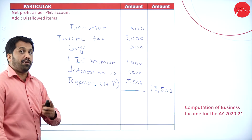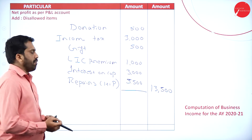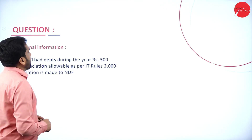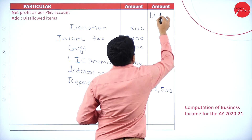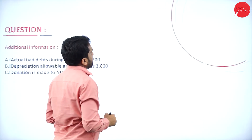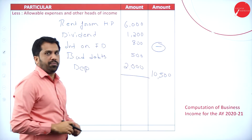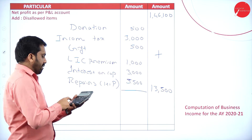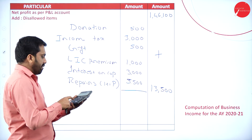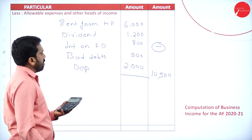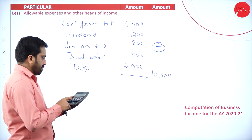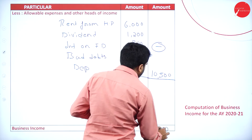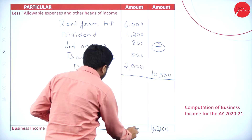Before arriving at the final answer, we write the net profit first. Net profit is 1,46,100. Then: 1,46,100 plus 13,500 minus 10,500. I got 1,49,100. So 1,49,100 is your business income.